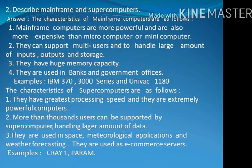Question number 2. Describe mainframe and supercomputers. Answer: The characteristics of mainframe computers are as follows. Number 1: Mainframe computers are more powerful and more expensive than microcomputers or minicomputers. Number 2: They can support multi-users and handle large amounts of inputs, outputs and storage. Number 3: They have huge memory capacity. Number 4: They are used in banks and government offices. Examples: IBM 370, 3000 series and Univac 1180.